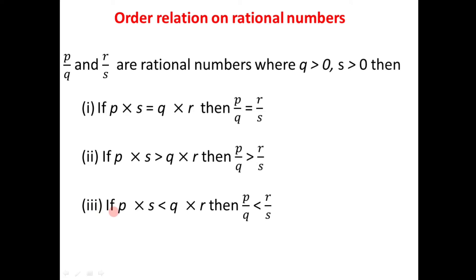In the same way, if the first product p times s is less than the second product q times r, then the first number p divided by q is less than r divided by s. So these are the three rules by which we can decide the order relation between given rational numbers.